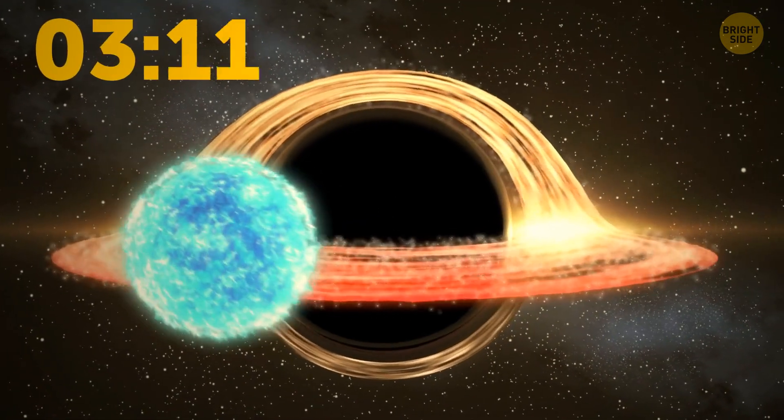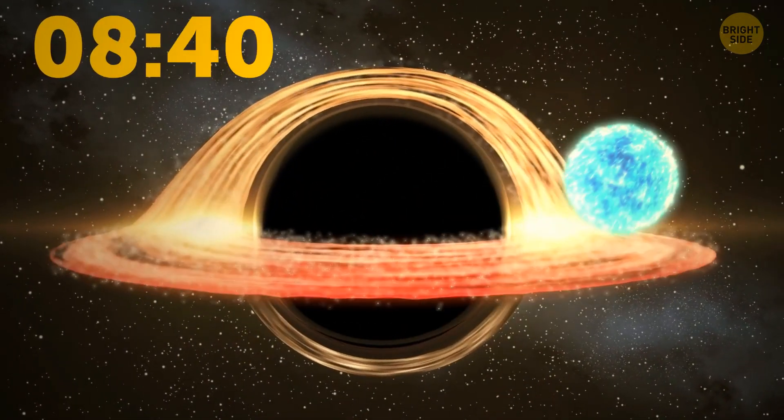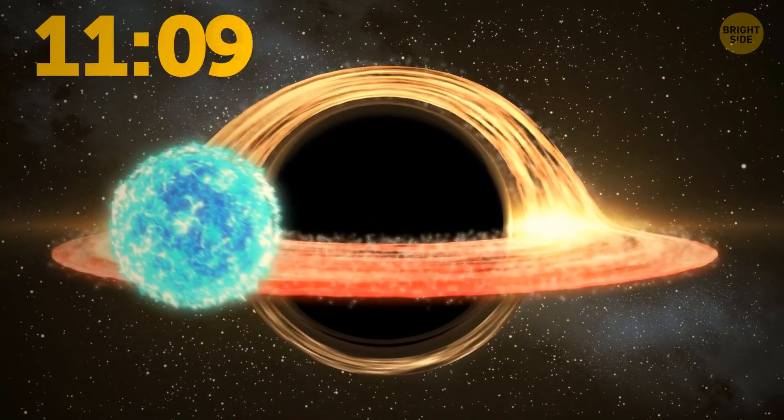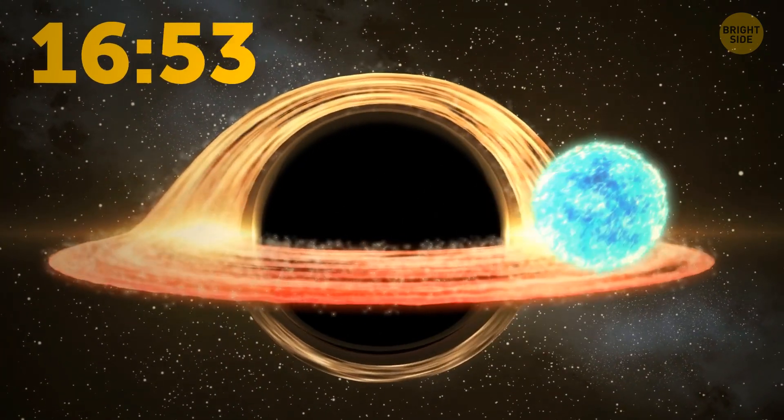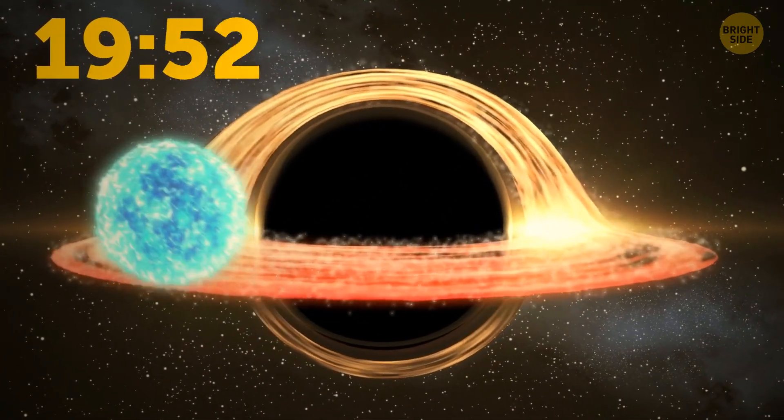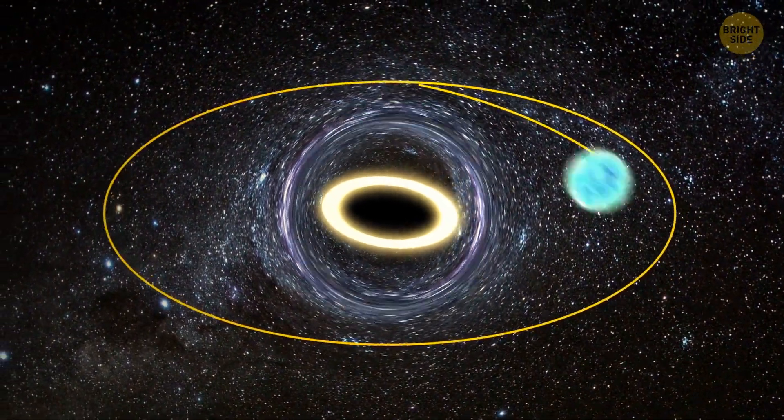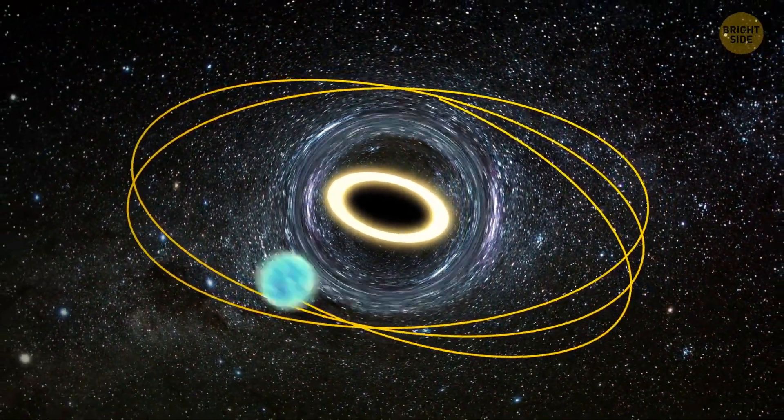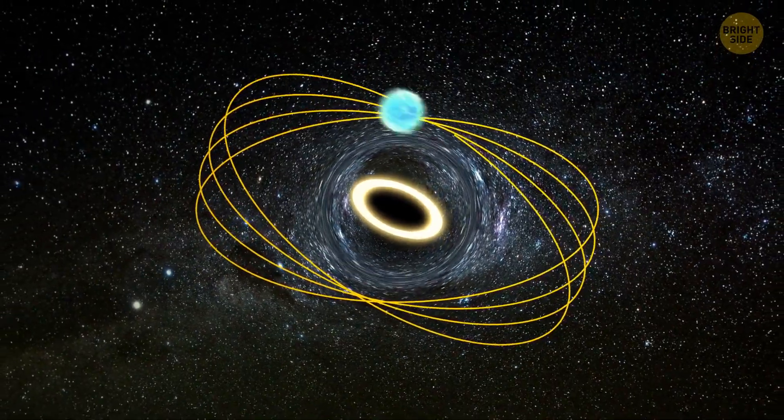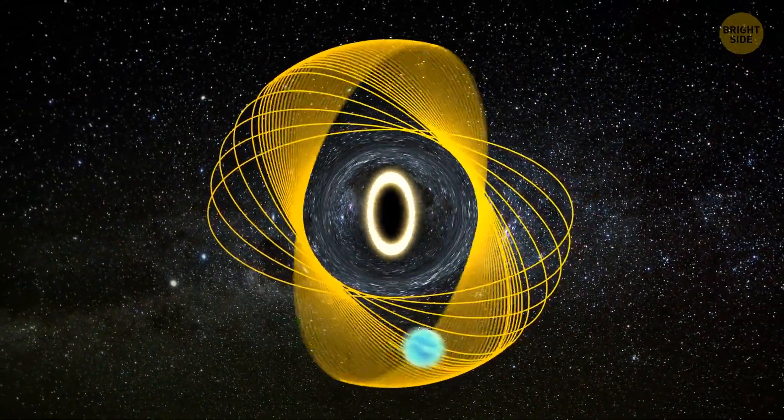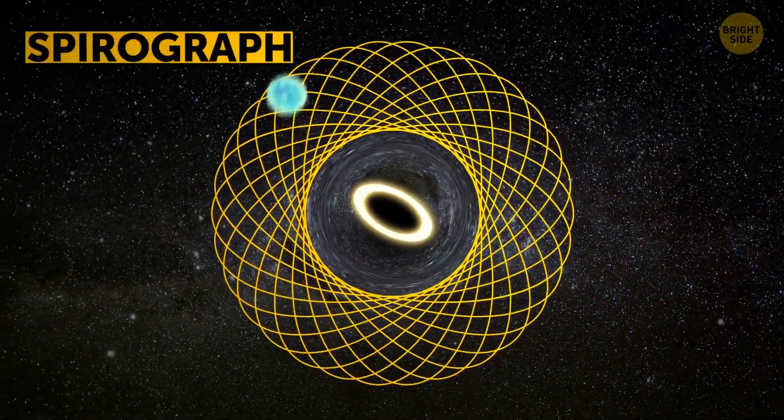Ever since, the now white dwarf has been traveling in nine-hour laps. It stays far enough from the hole so it won't fall in or get swallowed. Its journey isn't going super smoothly. Because of gravity, the orbital path is constantly rotating. After two days, it resembles a spirograph pattern.